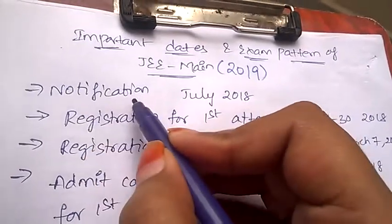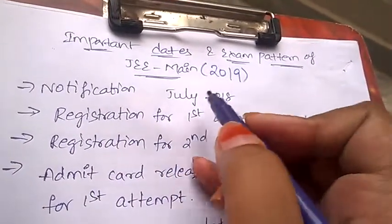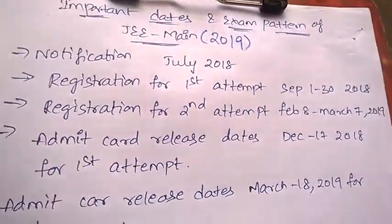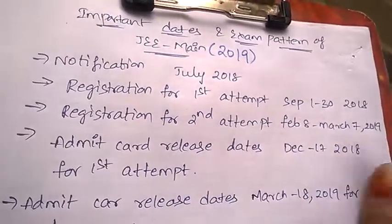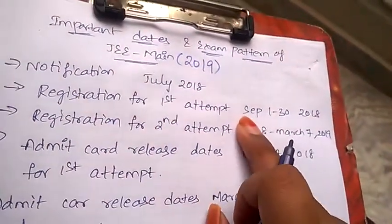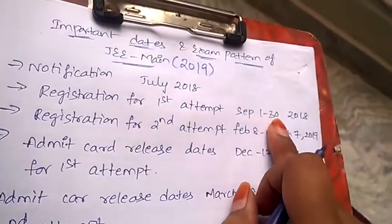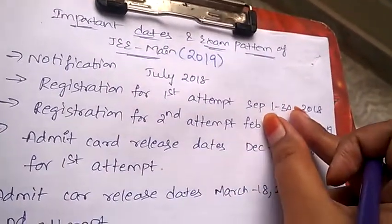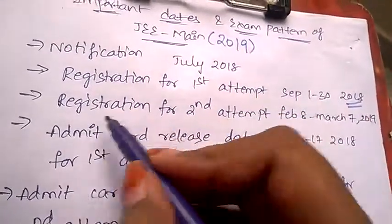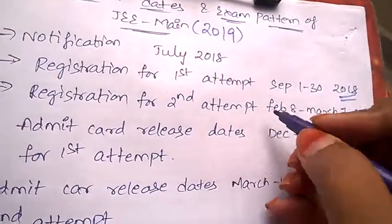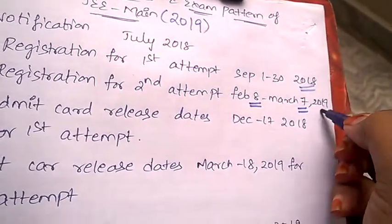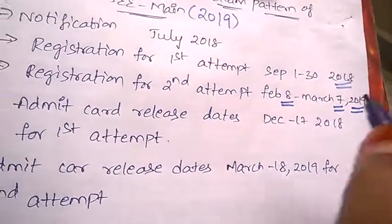First is the notification of the JEE Mains, which will be in July 2018. Registration for the first attempt will be from September 1st to 30th of year 2018. Registration for the second attempt will be between February 8th to March 7th of year 2019.